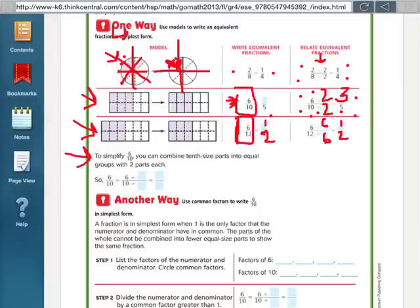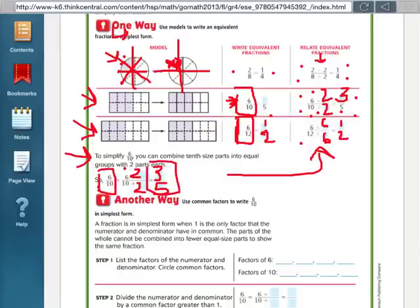So, here it says, to simplify 6 tenths, you can combine tenths-sized parts into equal groups with two parts each. So, they're just having us rewrite, sort of like what we did up here, but instead of twelfths, we're doing tenths. So, we're trying to figure a number that can fit both into 6 and 10 equally. I'm going to do 2, because it told us two parts each. 6 divided by 2 is 3. 10 divided by 2 is 5. So, 6 tenths, in its simplest form, is 3 fifths.